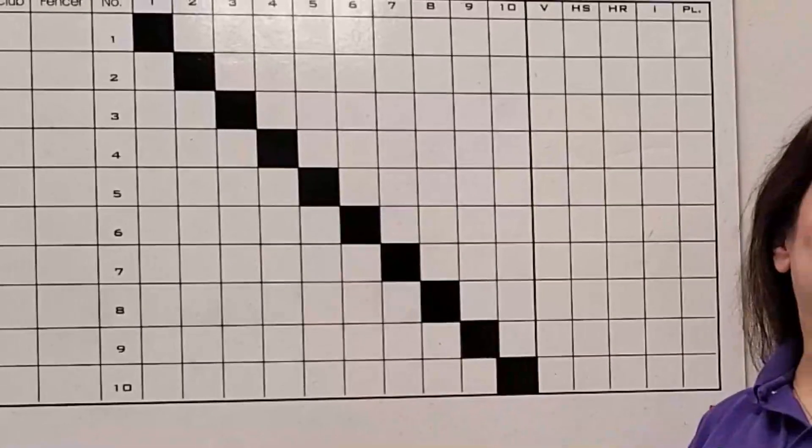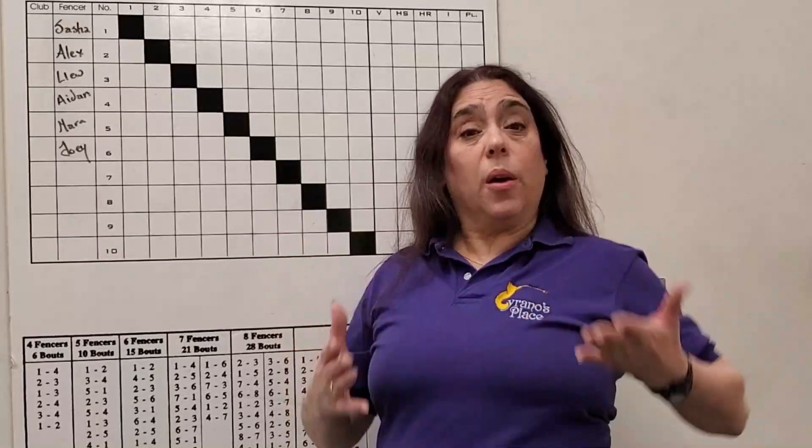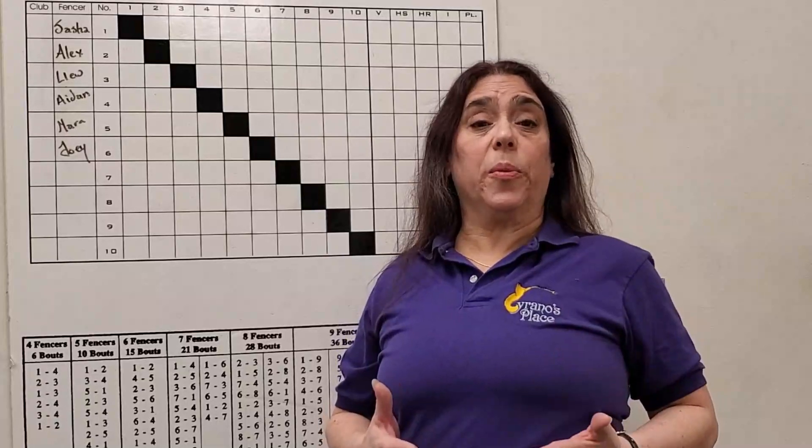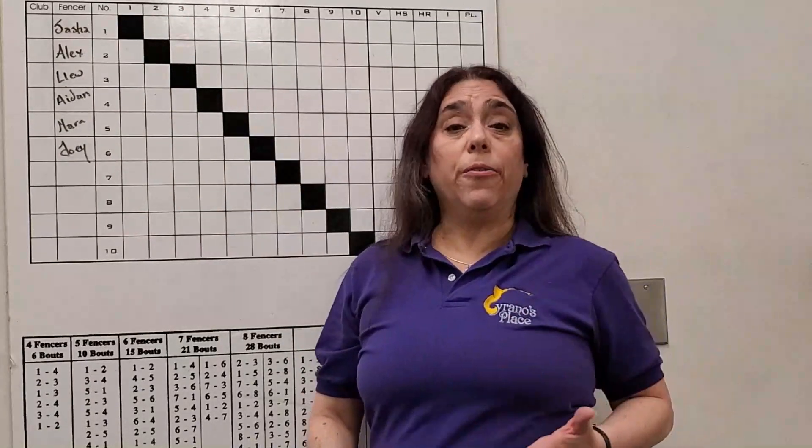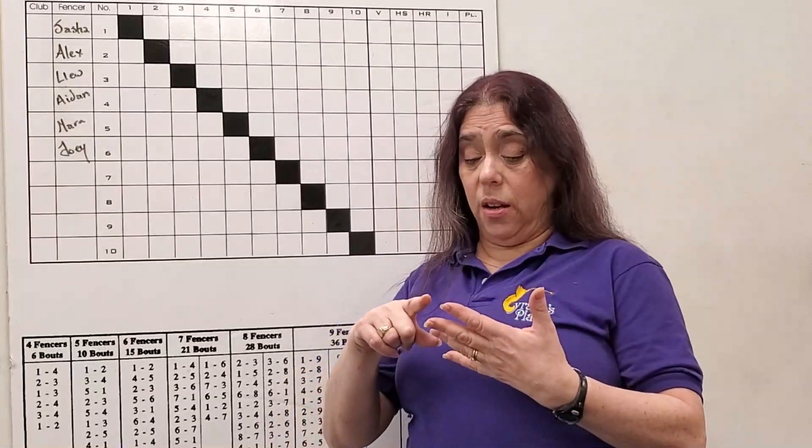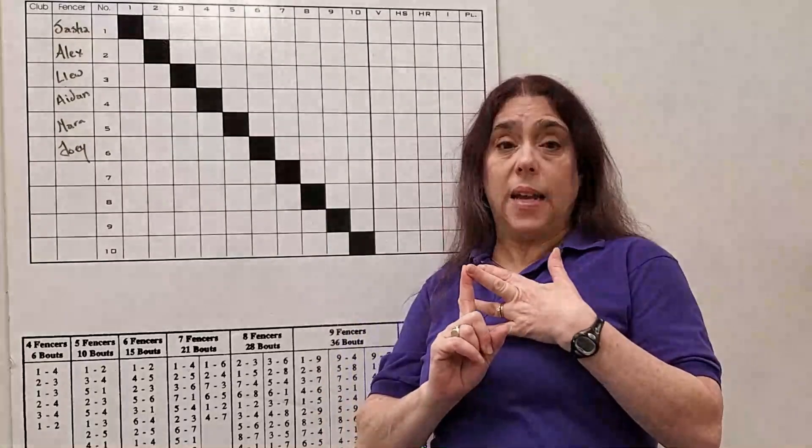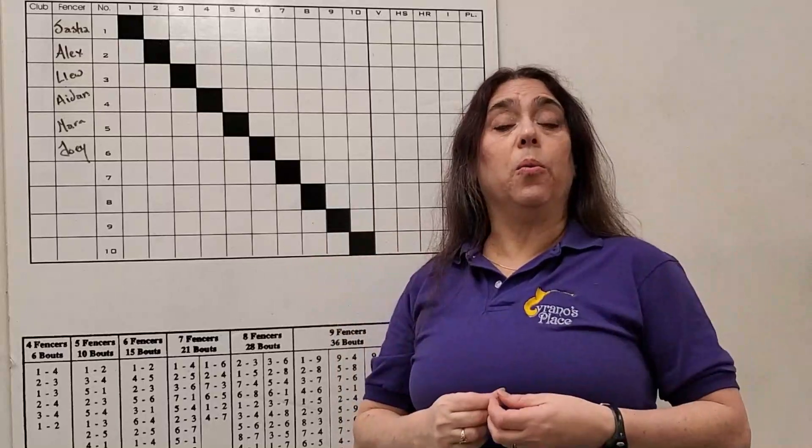Behind me is a basic score sheet. Once the bout committee figures out the pools, they'll print out the pool sheets and distribute them to the referees. You can see we put our names in here. The referee will take their pool sheet and check everyone in to make sure everybody's there, they've got their plastrons on, any equipment check has been taken care of, and they've checked IDs.